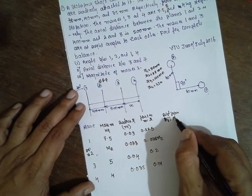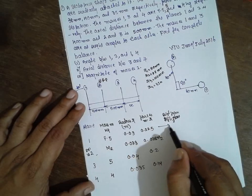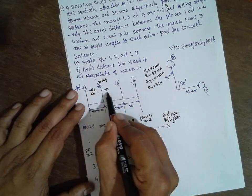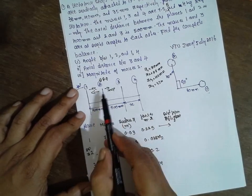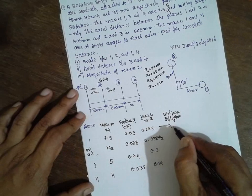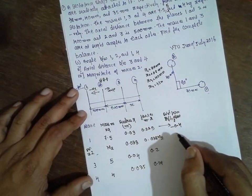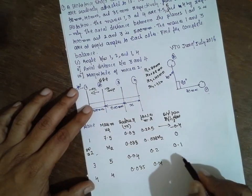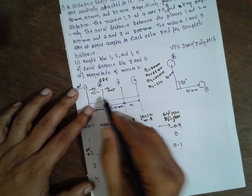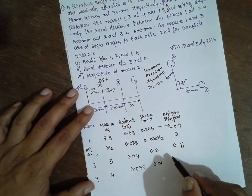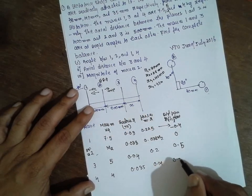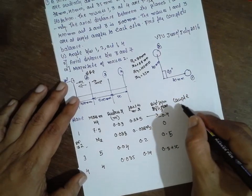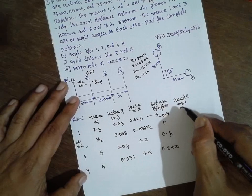Taking plane two as the reference plane: distances to the left are negative and to the right are positive. The distance from plane one to two is −0.1 m. Plane two is zero (reference). The distance from two to three is +0.5 m, and from two to four is 0.5 + X m.